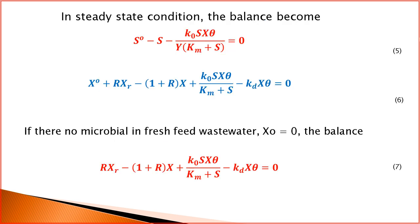At steady state conditions where dX/dt = 0 and dS/dt = 0, the equations become: S0 − S − k0·S·X·theta / (Y·(Km + S)) = 0; and X0 + r·Xr − (1 + r)·X + k0·S·X·theta / (Km + S) − kd·X·theta = 0.